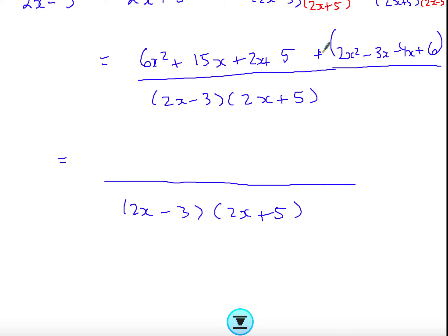I'm bringing all the terms together. I have 6x squared and 2x squared. Because it's a positive, I can get rid of this bracket. If it was a negative, you have to change the signs. 6x squared and 2x squared will give me 8x squared. I have 15x and 2x and I'm taking away 3x and taking away 4x. That will leave me with 10x. I have the 5 and the 6, so that will give me 11.